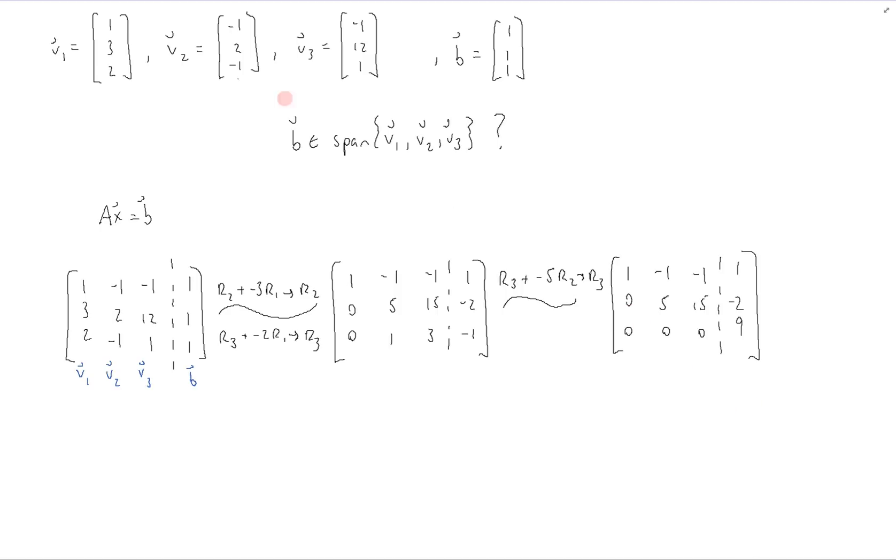And from here, we can see that we have an inconsistent equation, because of this last row right here, which basically says that 0x1 plus 0x2 plus 0x3 is equal to 9, which is impossible.